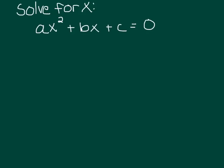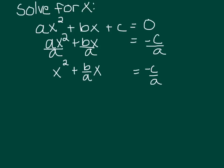First let's move c over to the other side, and then let's divide everything by a, and then let's complete the square. We need to take half of b over a, which means I'm going to take b over 2a — because that's half of b over a — and square it. And I'm going to add that to both sides, so b over 2a all squared to both sides.